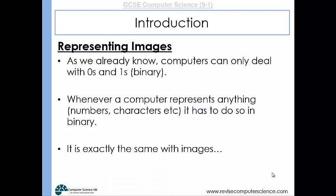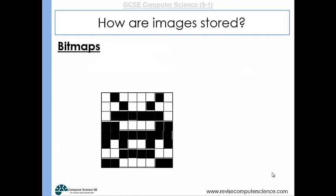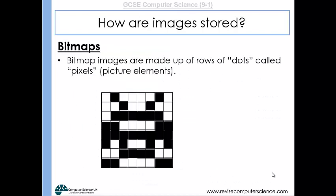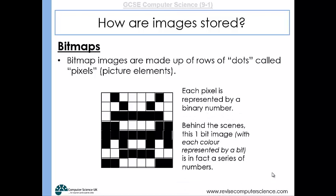It's the same with images — images are represented in binary numbers. A bitmap image is made up of rows of dots called pixels, and each pixel is represented by a binary number. Behind the scenes of a one-bit image, with each colour represented by a bit, there is in fact a series of numbers — zeros and ones.